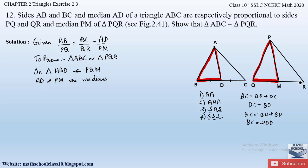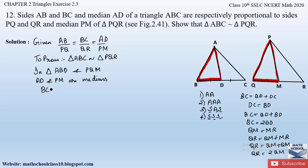Similarly, in triangle PQR, median PM divides side QR equally, giving QM = MR. Therefore QR = QM + MR = QM + QM = 2QM. So we have BC = 2BD and QR = 2QM — let this be equation 1.